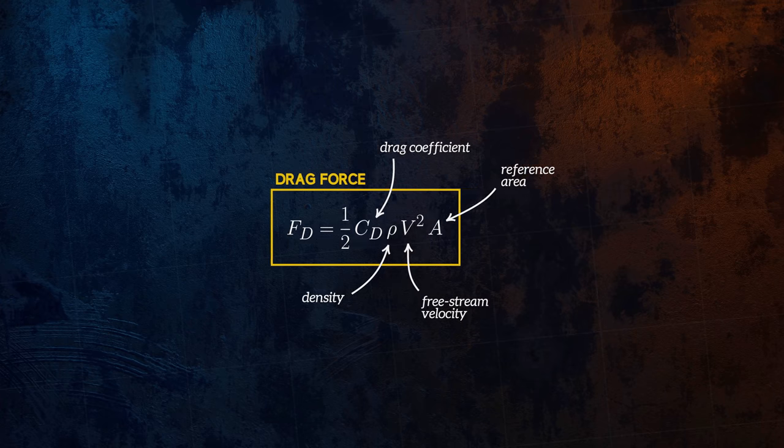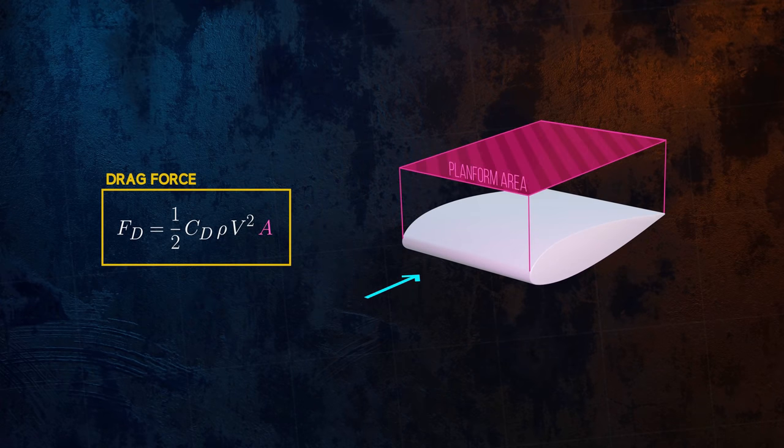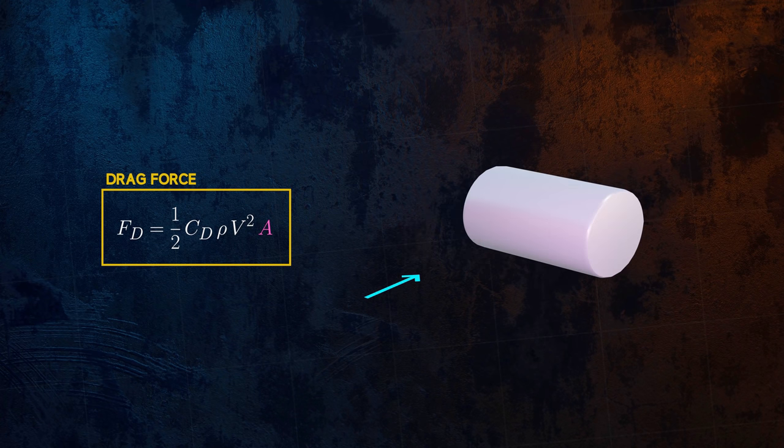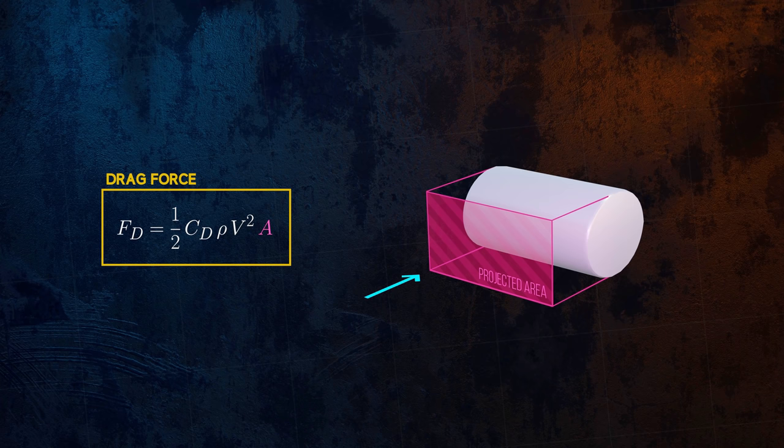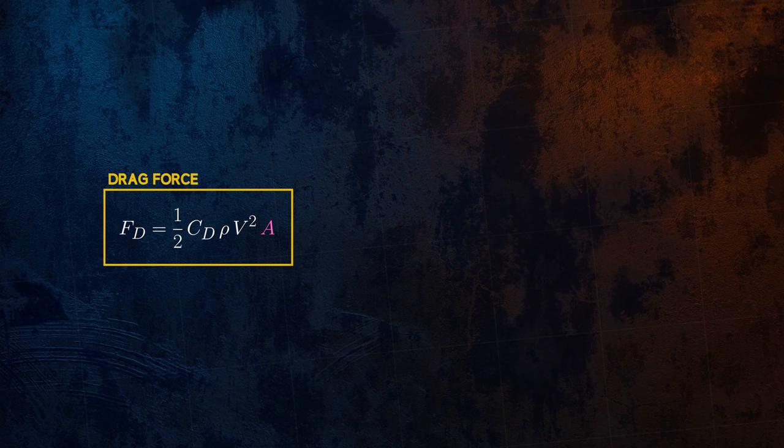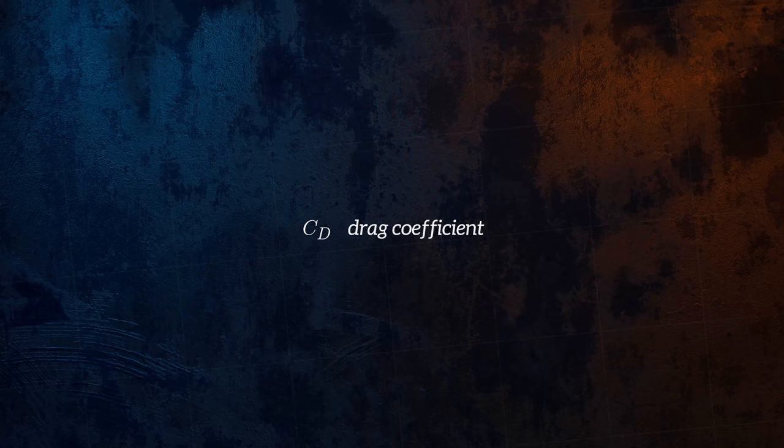For airfoils and other streamlined bodies, A is usually the planform area, and for blunt bodies, it's usually the projected frontal area. The drag coefficient can vary quite substantially with Reynolds number. Let's look at how it varies for a few different two-dimensional shapes.